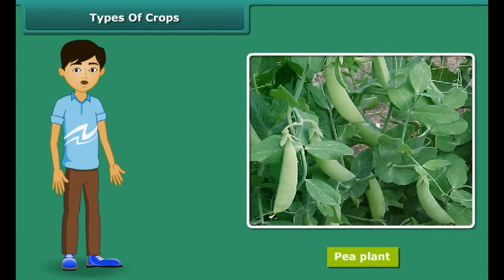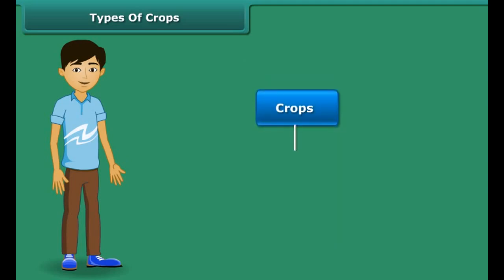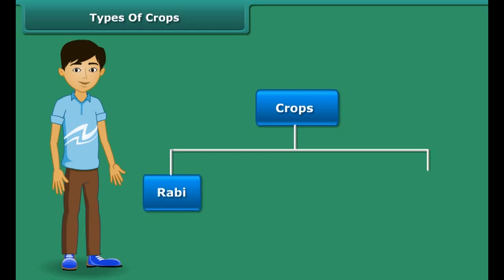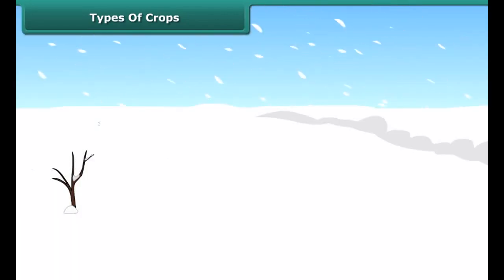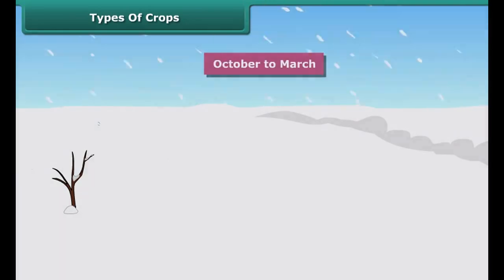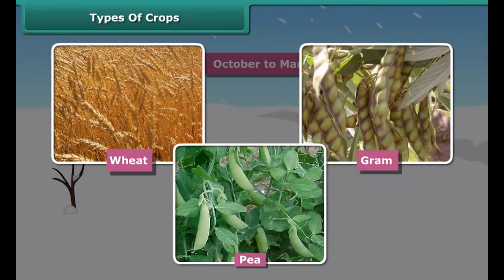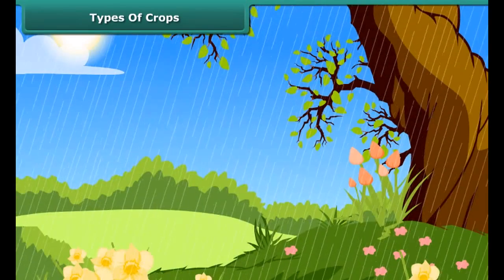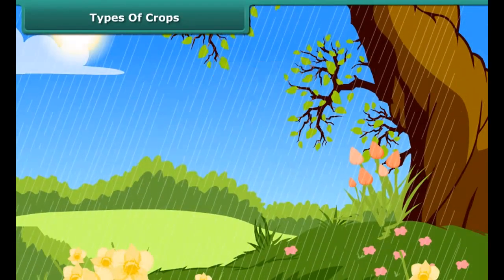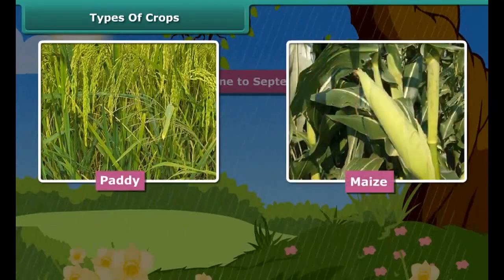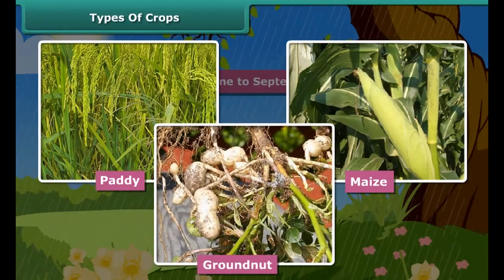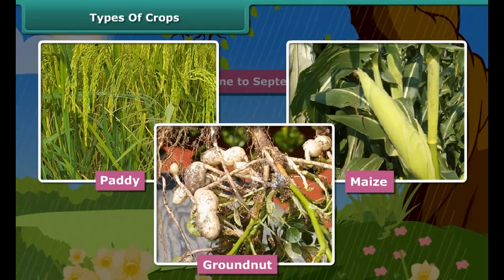If you wish to grow a pea plant in the hot season, you can't do it. In India, crops are broadly classified into two categories on the basis of the season they are grown in. Rabi crops are grown in the winter season from October to March — wheat, gram, and peas are examples of Rabi crops. Kharif crops are sown in the rainy season, generally from June to September — paddy, maize, and groundnut are common examples. These activities are known as agricultural practices.